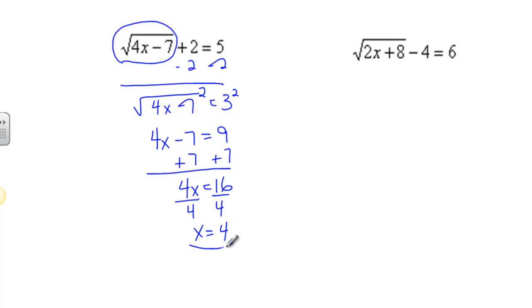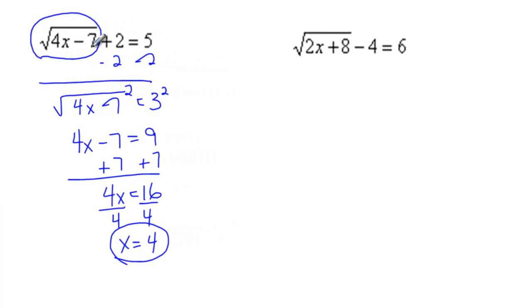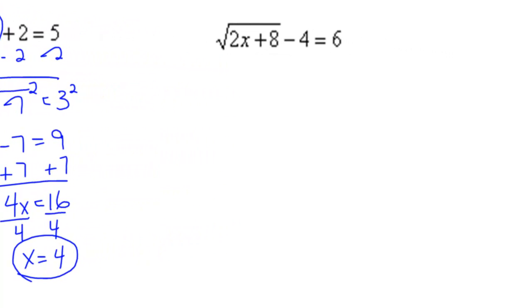Now checking is really going to come into play because now we're going to start squaring some things. If I do 4 times 4, that's 16, and 16 minus 7 is 9.